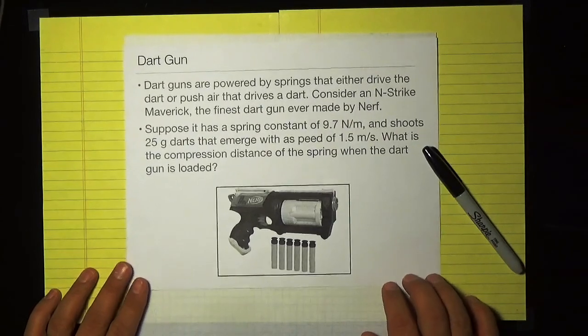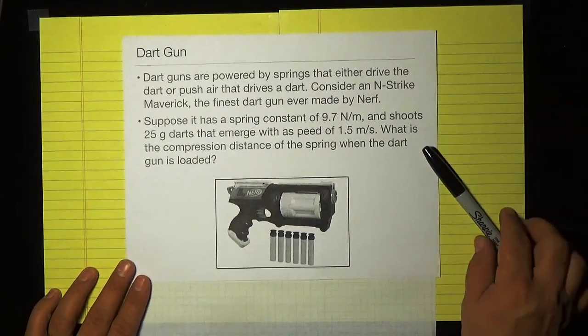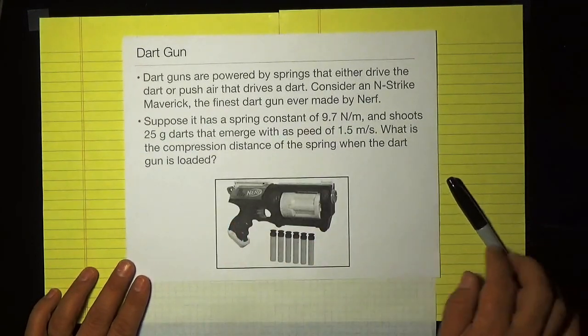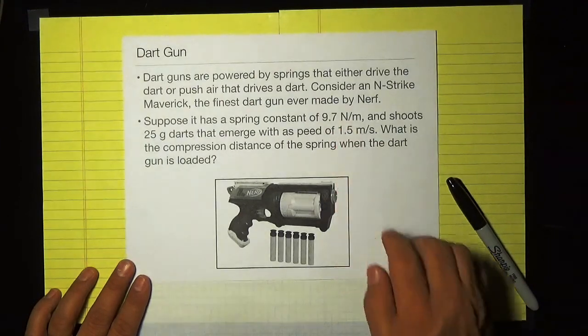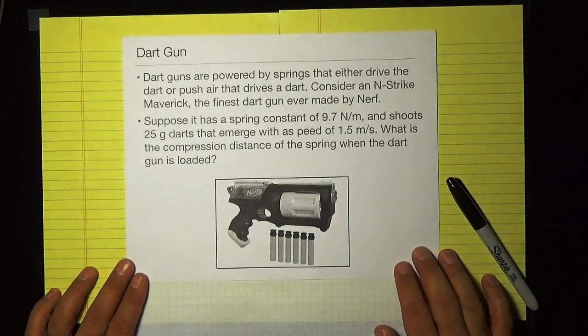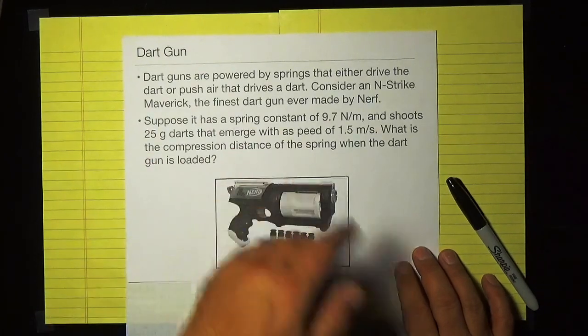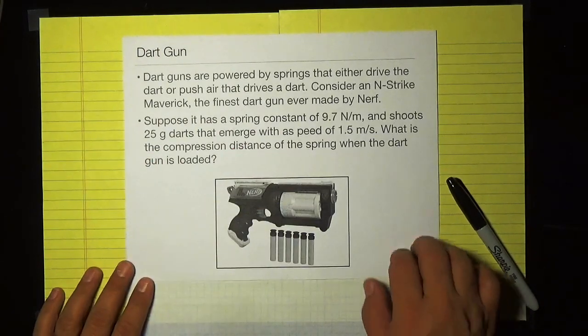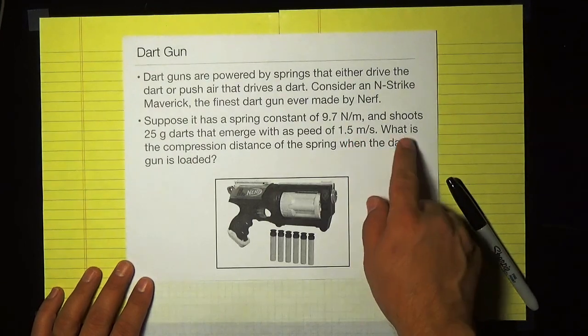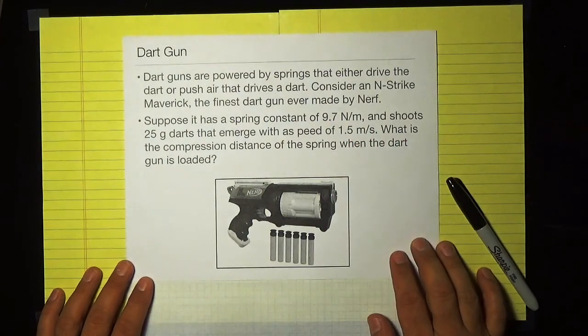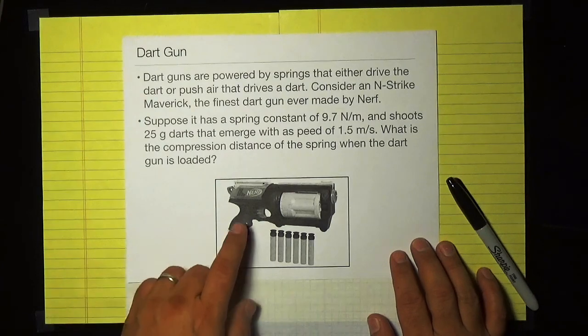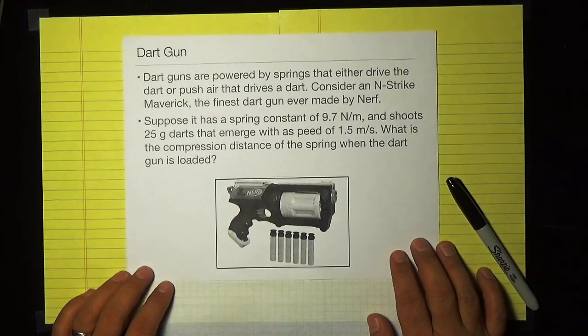And let's imagine doing a problem about this dart gun. So suppose the spring in the Maverick has a spring constant of 9.7 newtons per meter. It shoots 25 gram darts and those darts emerge with a speed of 1.5 meters per second. And what I want to know is what is the compression distance of the spring when the dart gun is loaded?